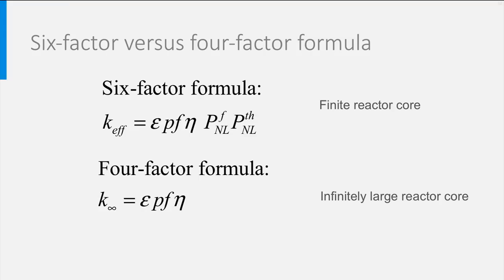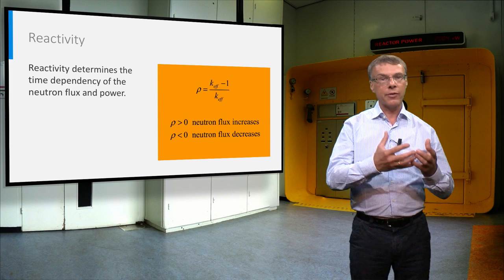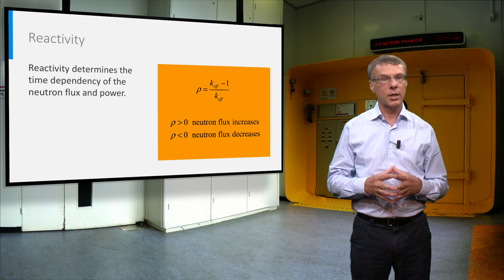From the multiplication factor we can derive another parameter that is closely related, namely reactivity. The reactivity of a nuclear reactor core is defined as the ratio of k-effective minus 1 and k-effective, as shown in the formula on the slide.